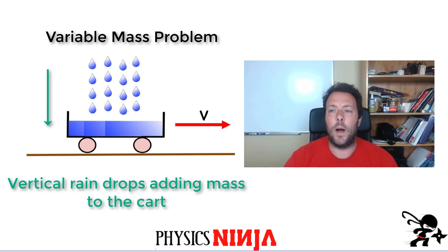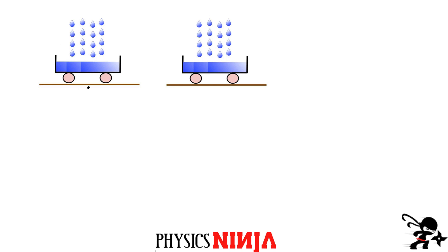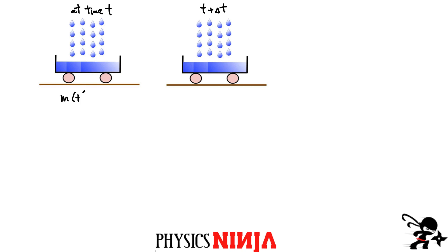Let's go. To get started, what we're going to do is consider this cart at two different times. This is going to be at some time t, and this is going to be at time t plus a little bit of time later. Everything inside the cart — the water, the mass of the cart, and the mass of the wheels — we're going to call the mass m at time t.